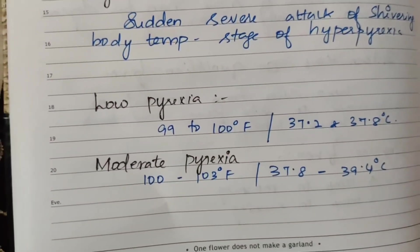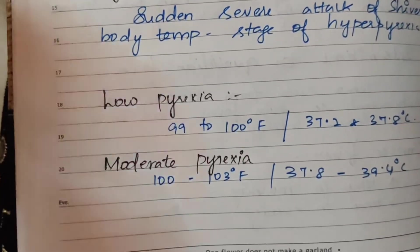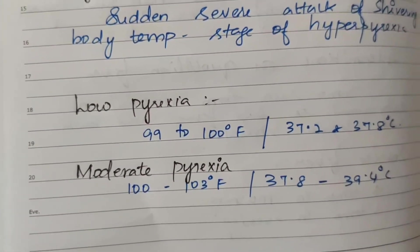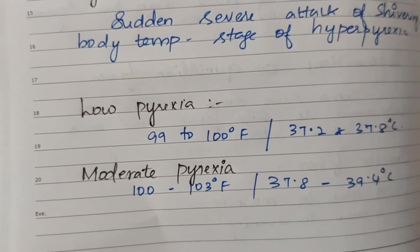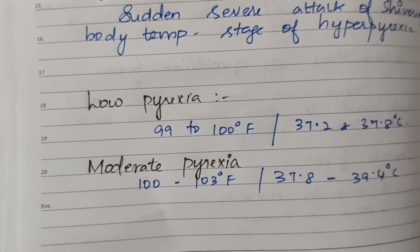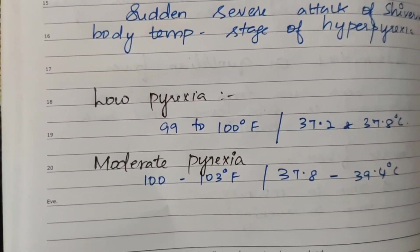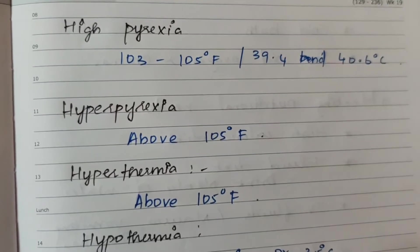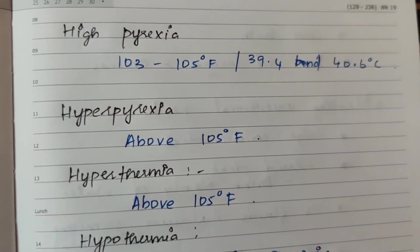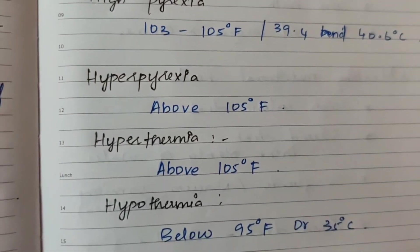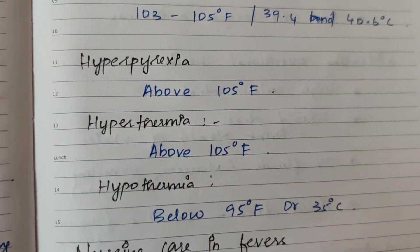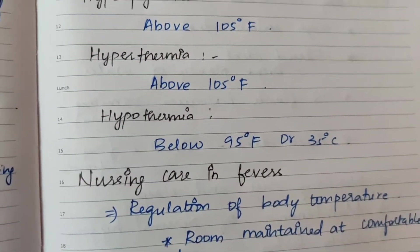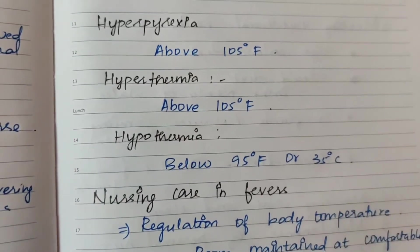Temperature-based classification: low pyrexia is 99–100°F (37.2–37.8°C); moderate pyrexia is 100–103°F (37.8–39.4°C); high pyrexia is 103–105°F (39.4–40°C); hyperpyrexia is above 105°F; hypothermia is below 95°F or 35°C.